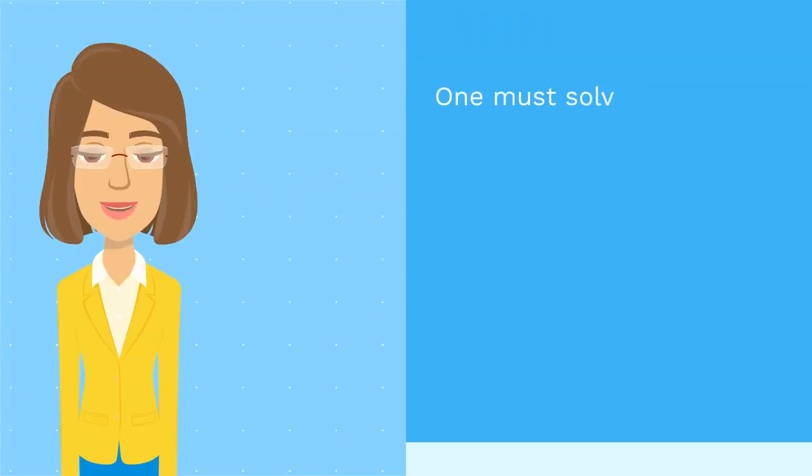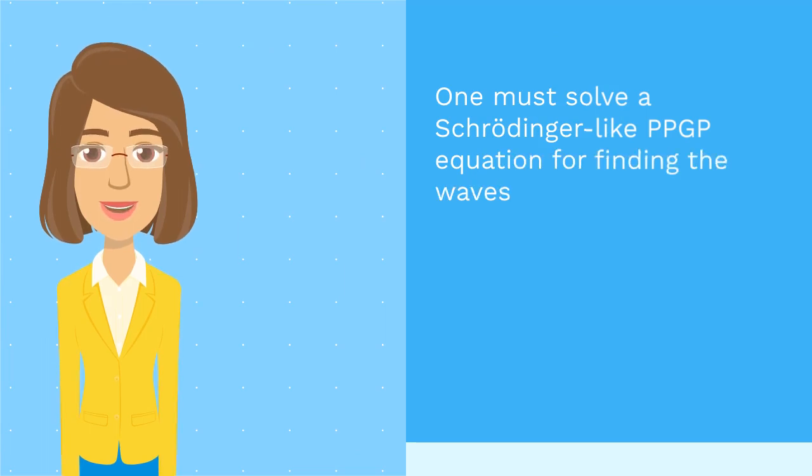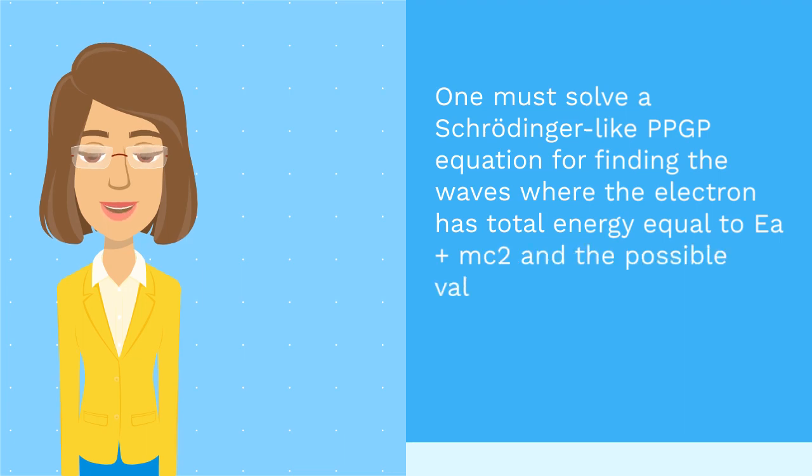One must solve the Schrödinger-like PPGP equation for finding the waves where the electron has total energy equal to Ea plus mc² and the possible values of the electron kinetic energy in these waves.